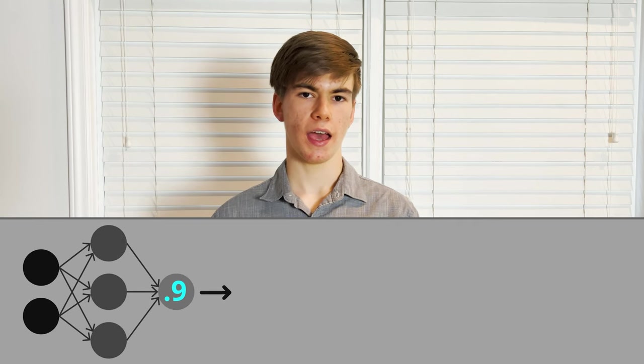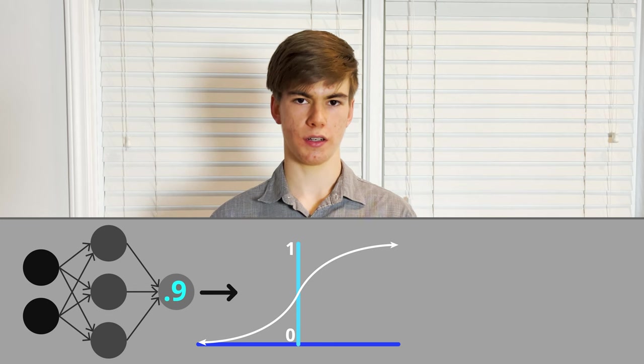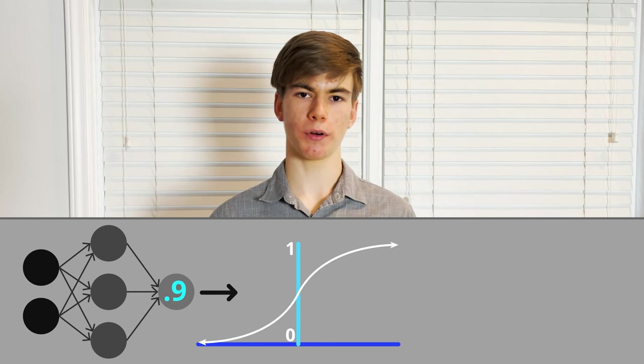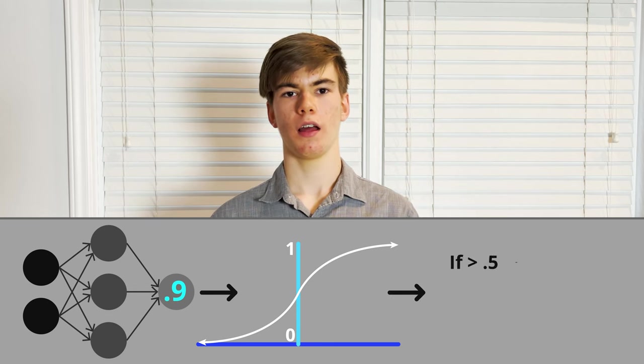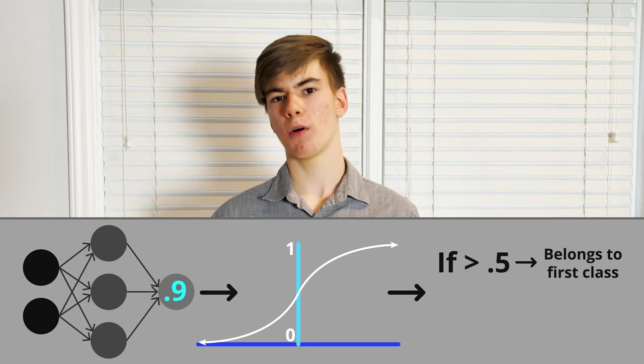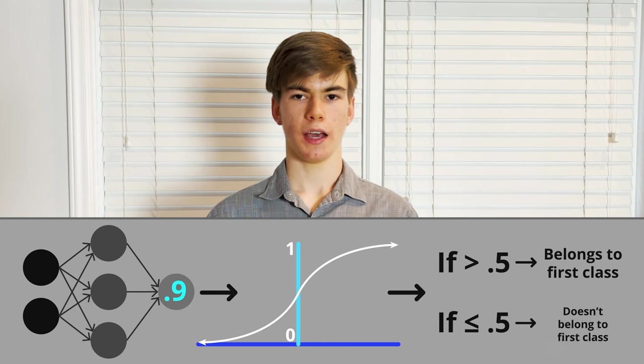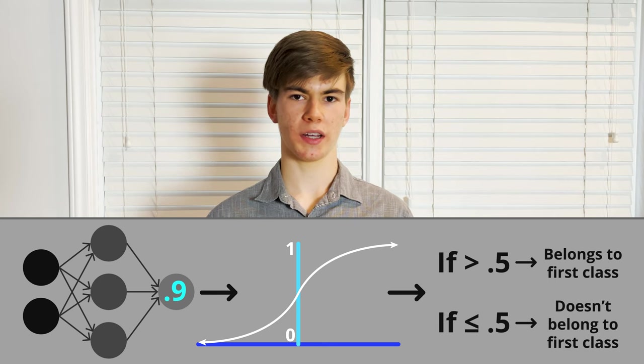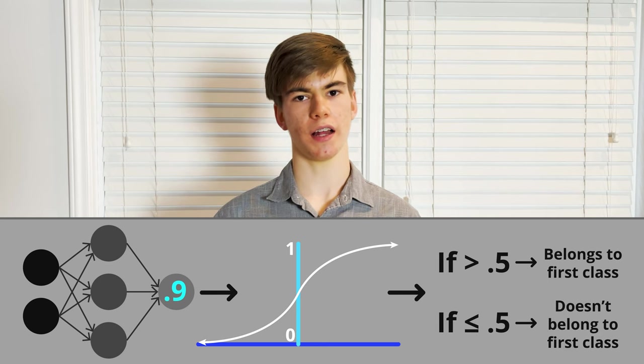We can also easily perform classification instead of regression. One easy way to do this is to simply take our output and plug it into a sigmoid function, which will return a number from 0 to 1. If the output is above 0.5, then we can say that the data point belongs to the first class. And if it is below 0.5, then we can say it does not belong to the first class.